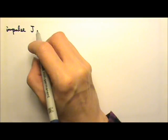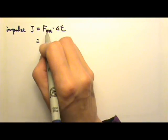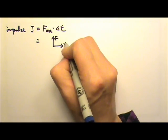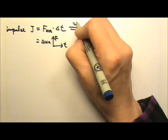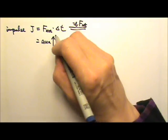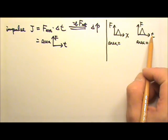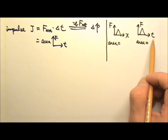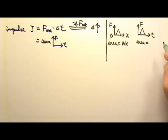We also talked about impulse. We use capital J for impulse. The impulse is the average force times time. Because we're multiplying, if you're given a force versus time graph, then the impulse will be the area of that graph. And if we're looking at the net force, the impulse produced by the net force also equals the change in momentum. For a force versus position graph, the area is the work done by that force. For a force versus time graph, the area is the impulse.